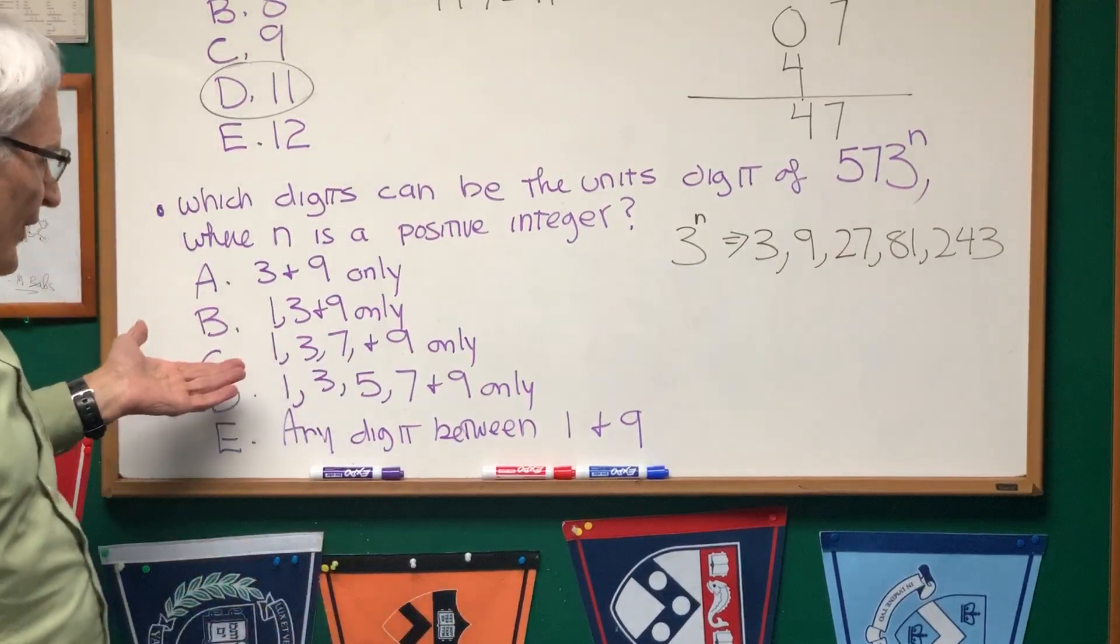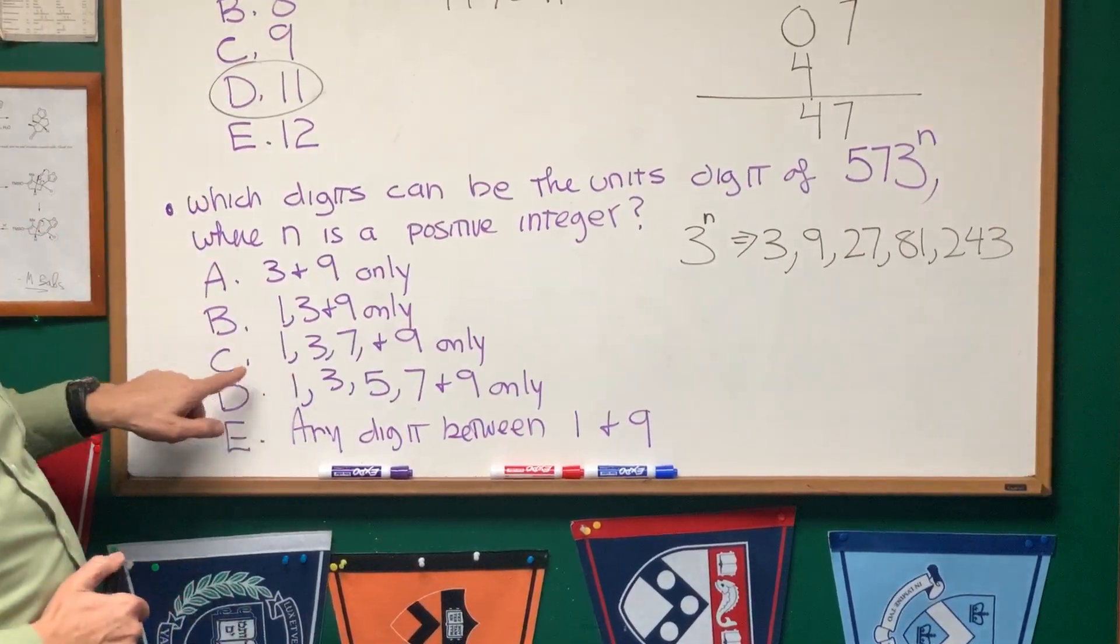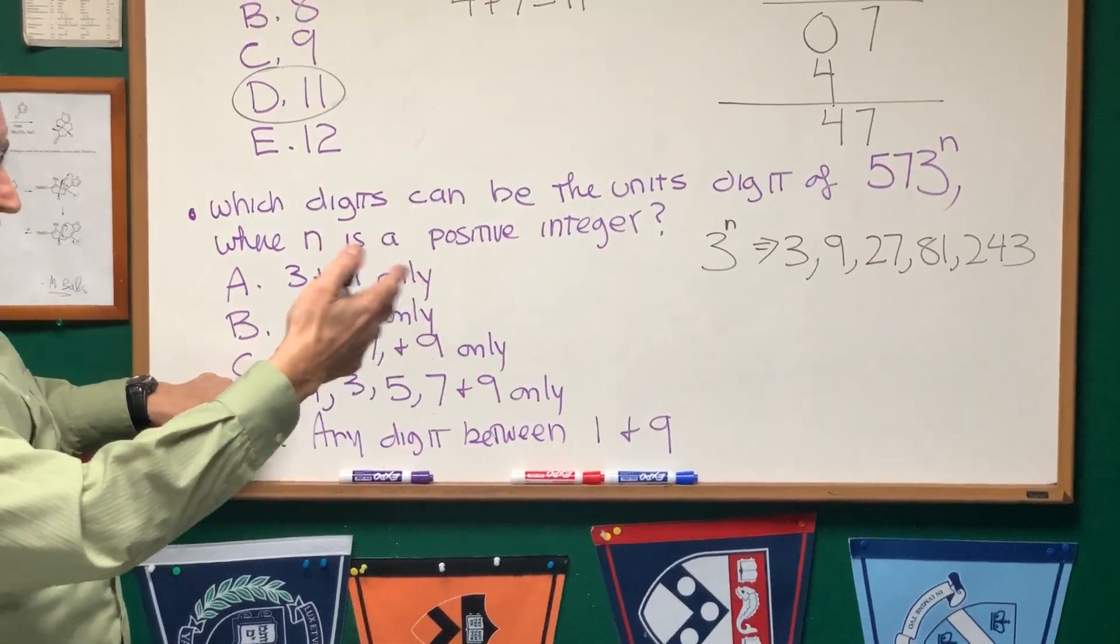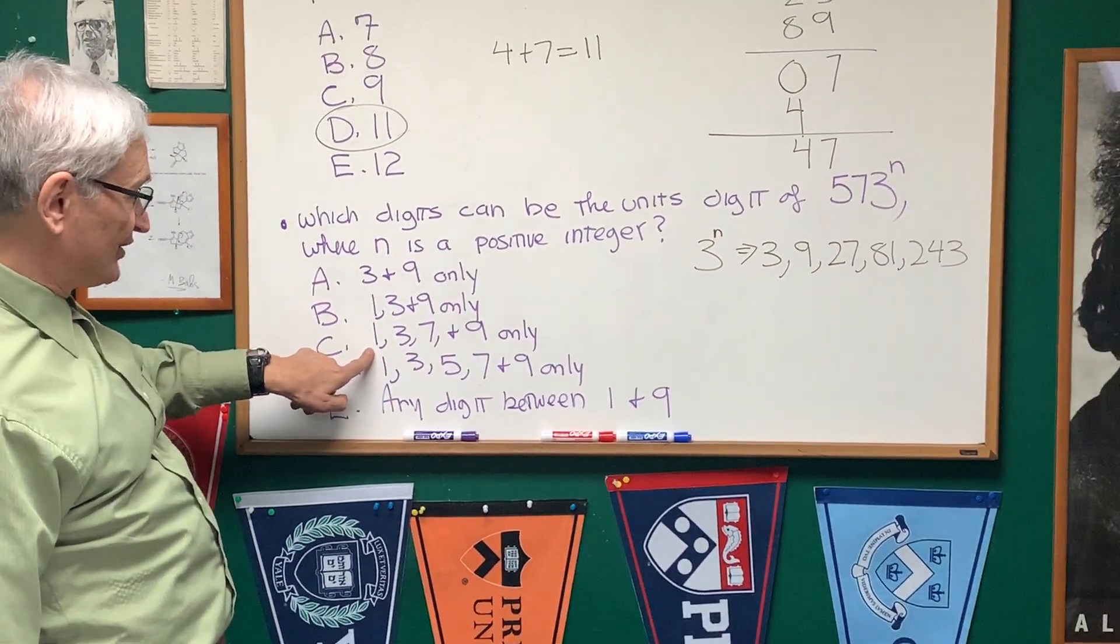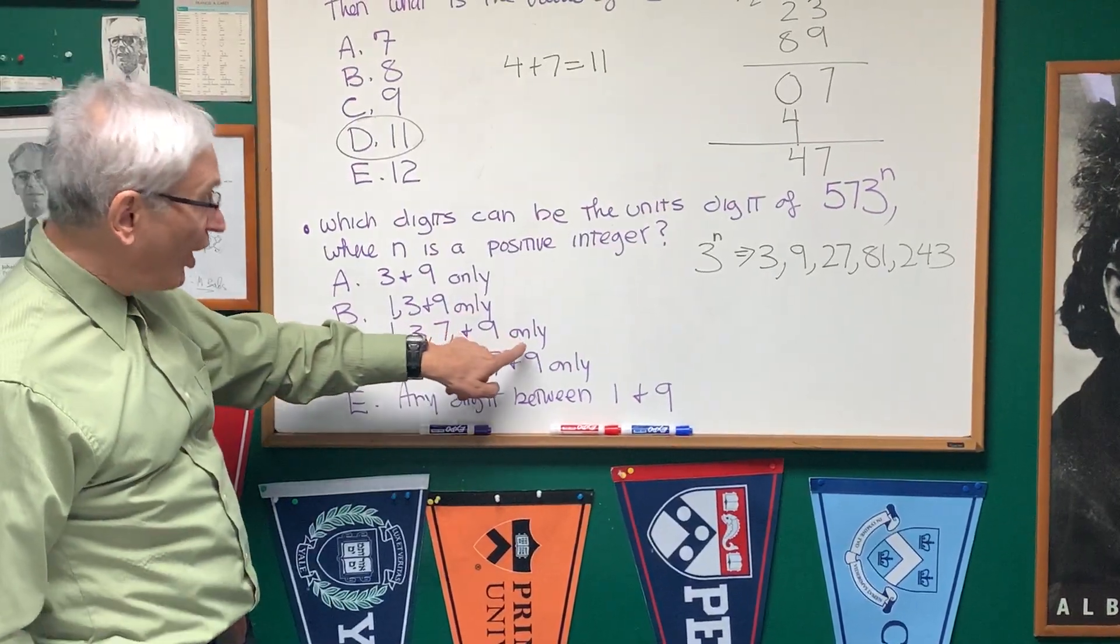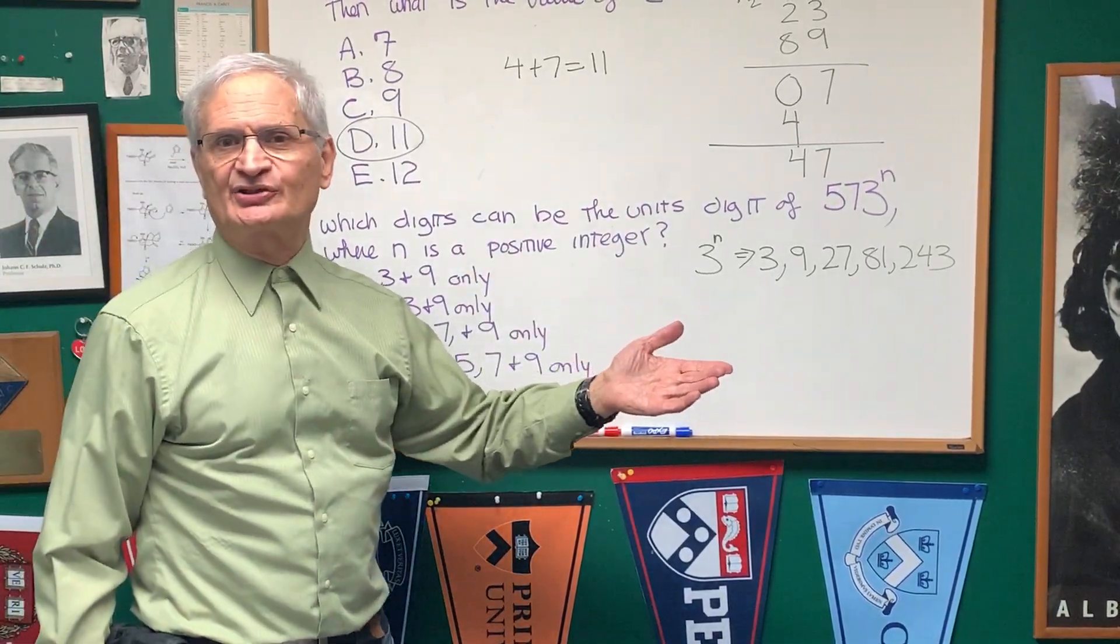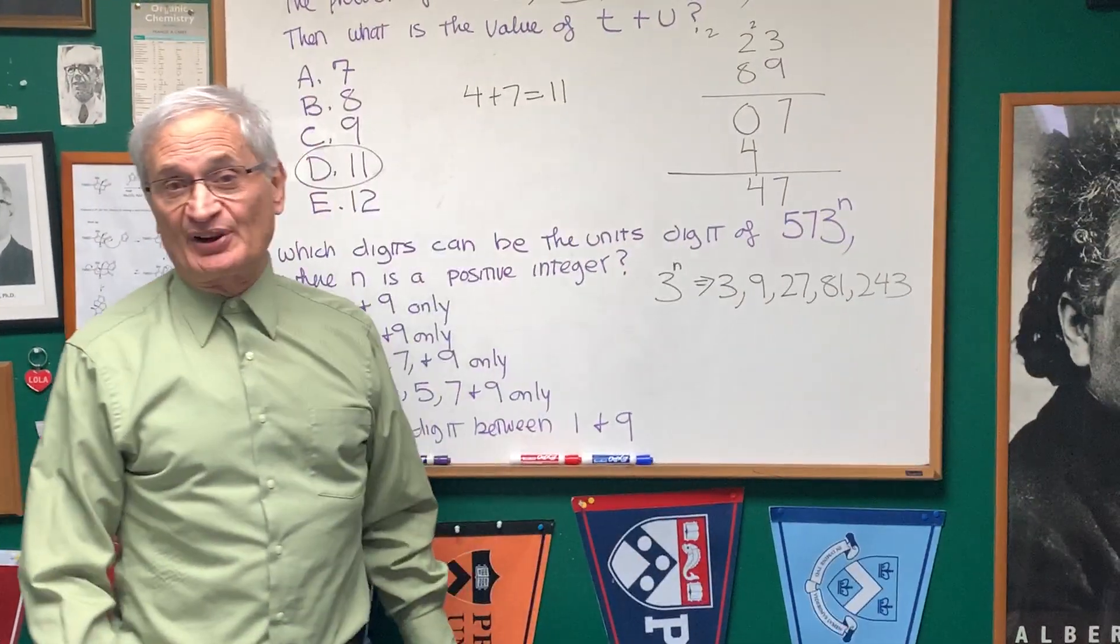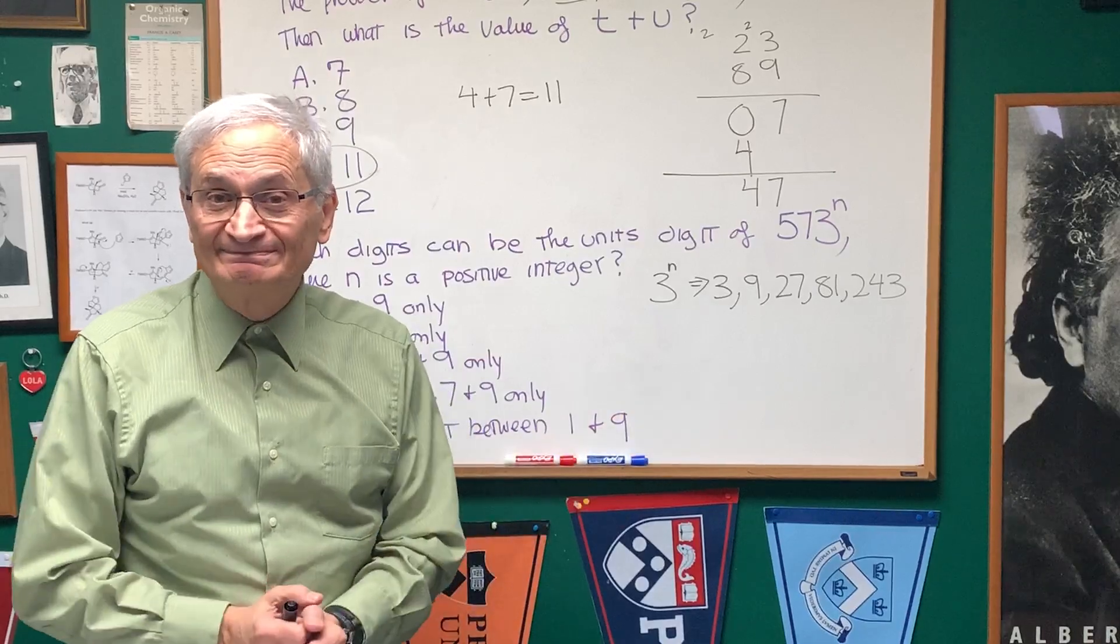So, we look at the choices here, and we see that choice C corresponds to the results of our multiplying the powers of three out for the first couple of places: one, three, seven, and nine only, and there's our answer to the problem. We don't have to worry about any fancy multiplication of 573 to the nth power.